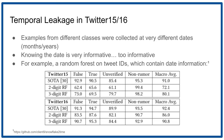For example, we tested this with a random forest on the first three digits of the tweet IDs, which contain information about the date. Knowing the first three digits of the tweet ID gives you a date down to an accuracy of about two or three days.